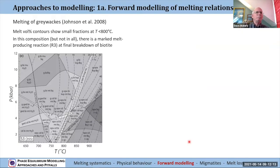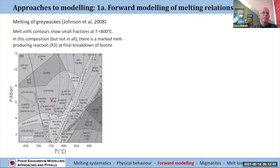Let's get down to the phase diagrams. Here we've got approaches to modeling involving forward modeling, and we've already seen the one from the pelite. Here is melting of metagraywackes from Johnson et al. 2008 — the solidus is here, and so this is the supersolidus region. These are diagrams calculated at a fixed amount of water fixed somewhere on the solidus, just as Dave described earlier. The melt volume contours show really rather small fractions in the region just above the solidus, and it's only until you get further over that you meet a band which is evidently an important biotite dehydration melting reaction, labeled R3. That's the reaction that eventually eliminates biotite, and we get into large melt fractions over this side of the diagram.